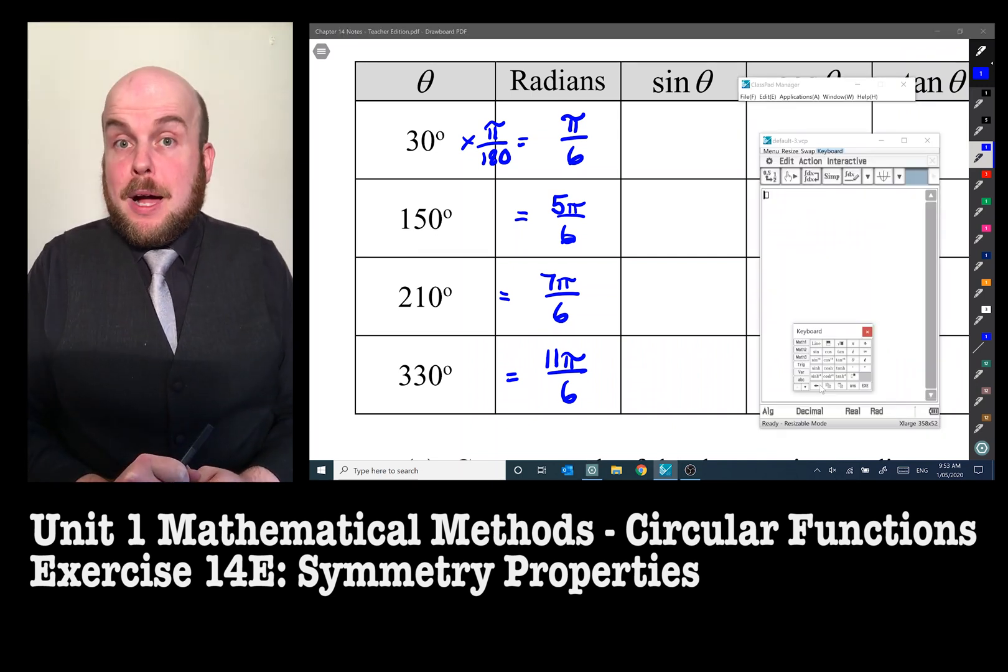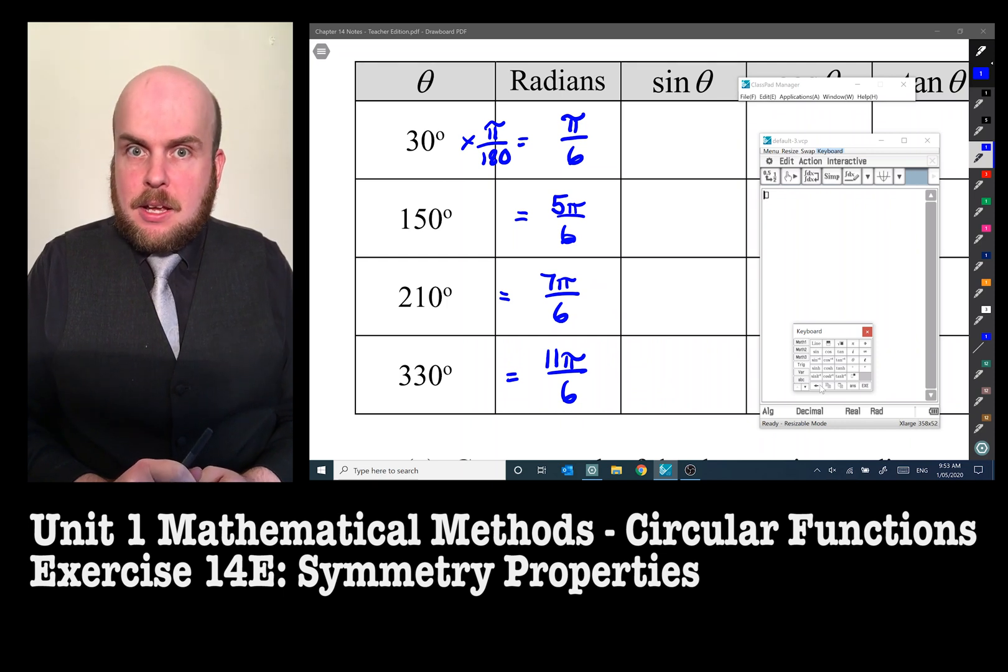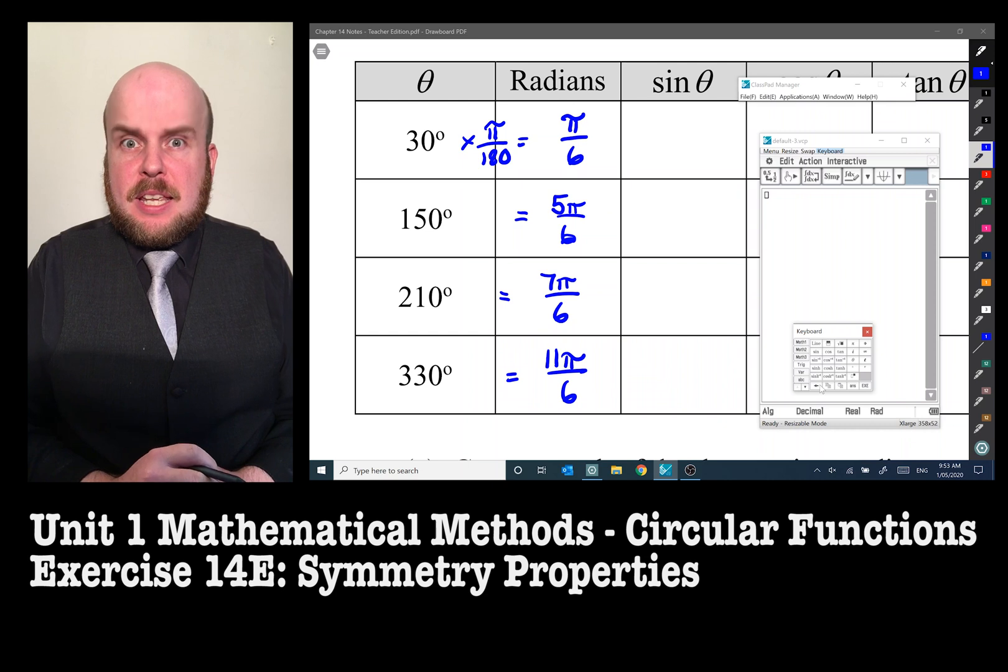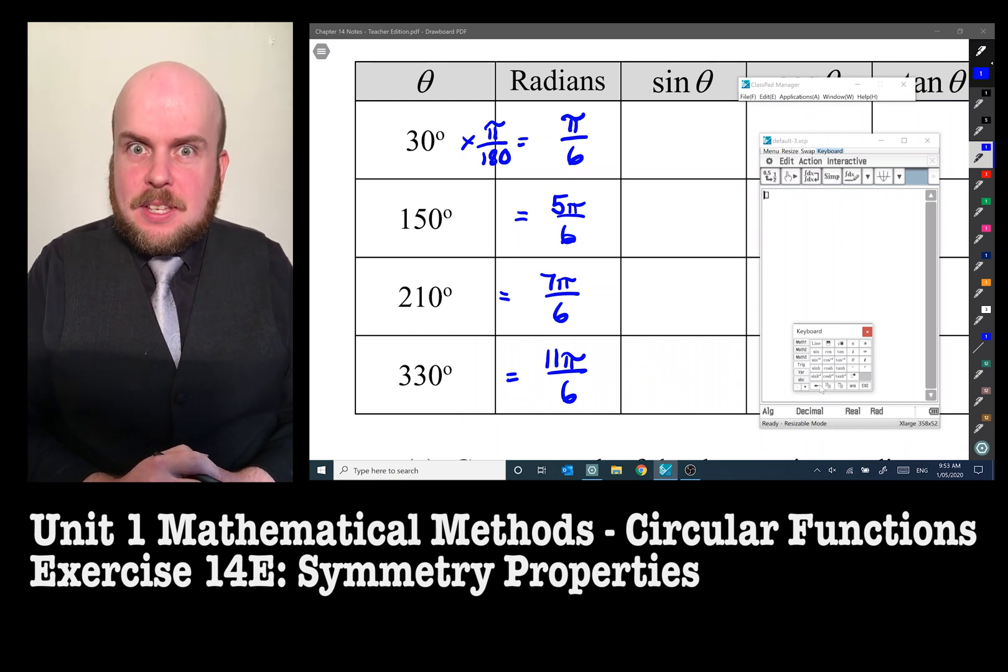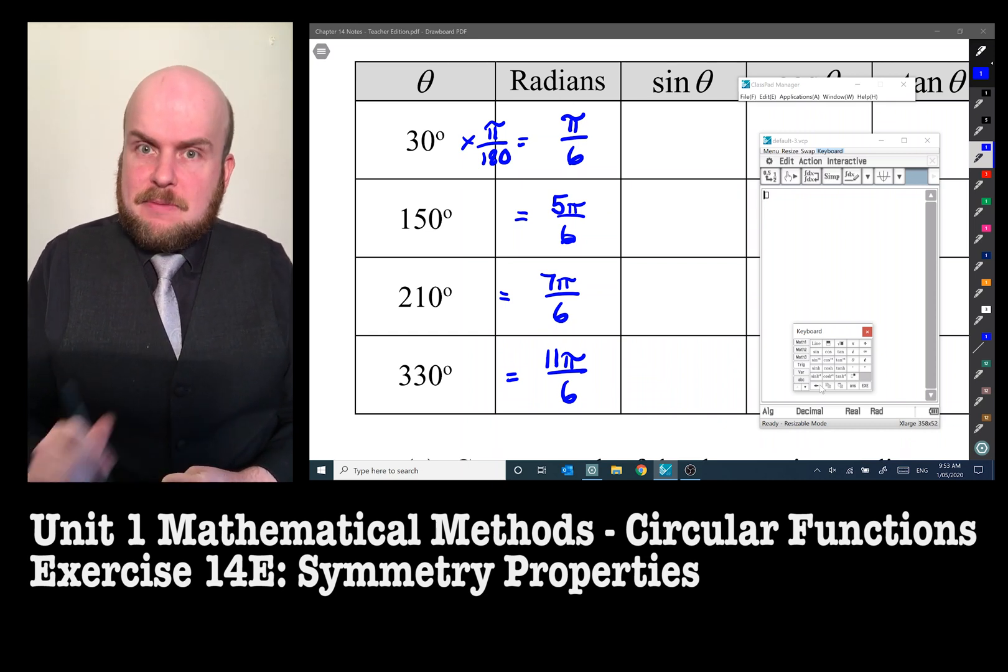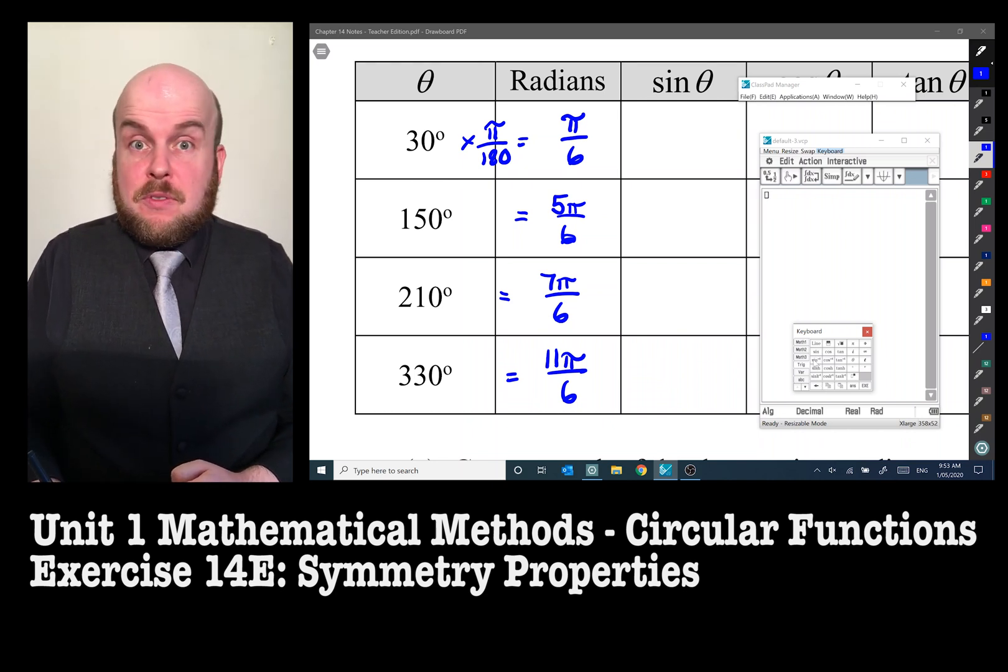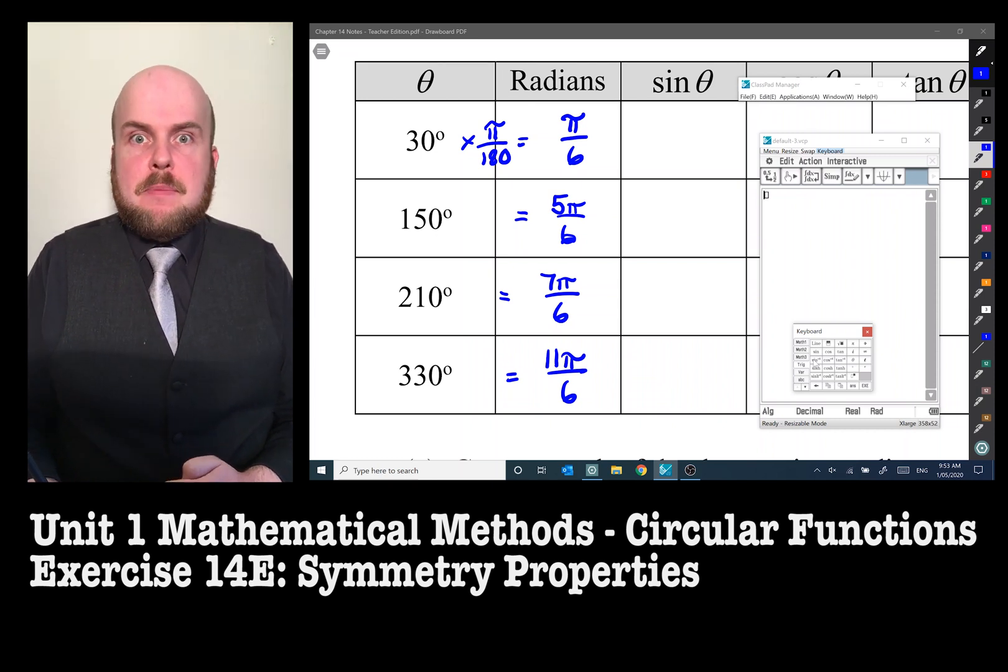Now we just need to enter these into a calculator. I'm going to use my Casio ClassPad to solve these. I've set the settings to decimal and I've made sure to put radians in there. I could have got the same result by using degrees, but since we have gone to the effort of converting to radians, I'm going to use the radians.